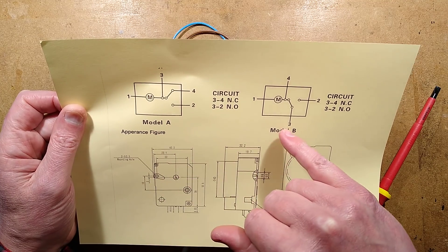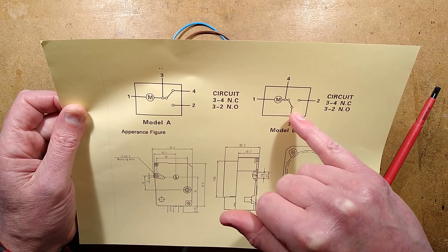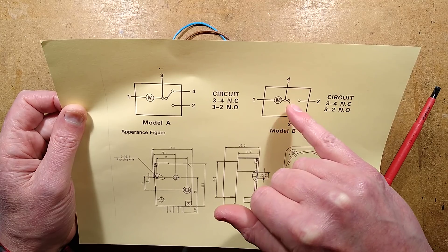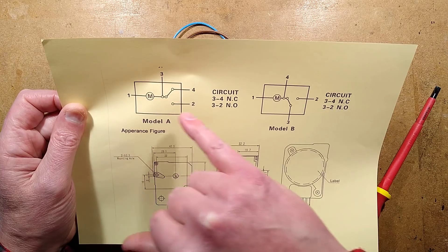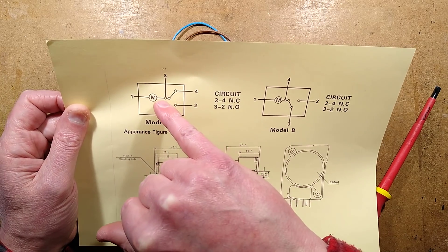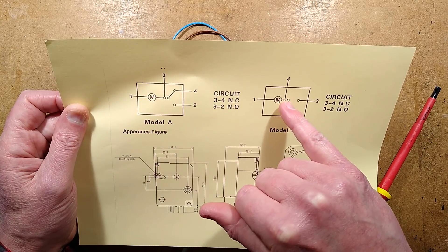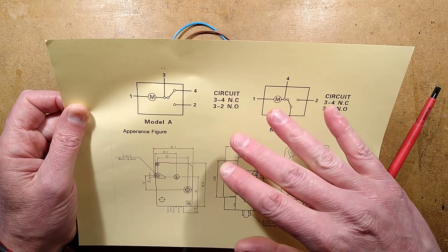In model A, pin 3 is the common for a changeover, pin 4 is normally closed, pin 2 is normally open. Model B has the same arrangement for the contacts, but the connection of the motor is different. One connects to the common contact, one to the normally closed contact, and that's because the motor actually stops during the defrost.